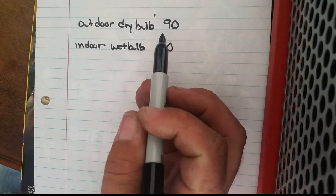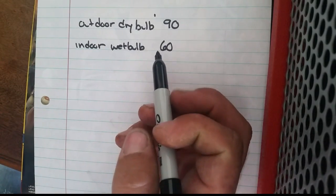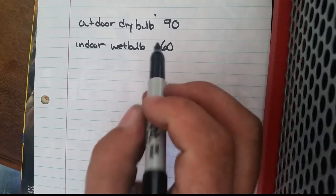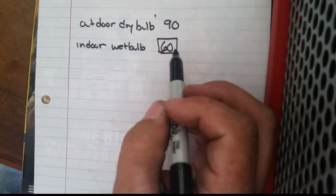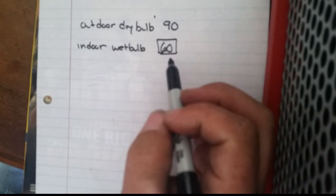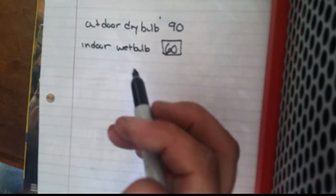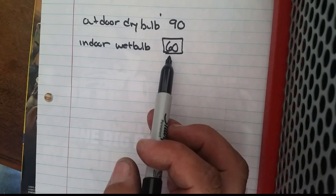Alright guys, let's say we have an outdoor dry bulb of 90, an indoor wet bulb of 60—and of course we can't use just a regular thermometer to measure this wet bulb. We need to account for our relative humidity. That's going to be very important because part of the way that we're calculating this is we're taking into account the enthalpy in the air, and that's where our wet bulb comes from.